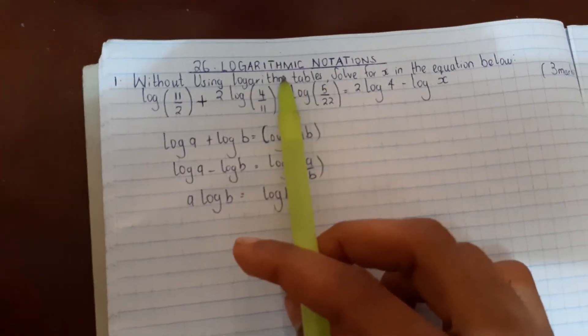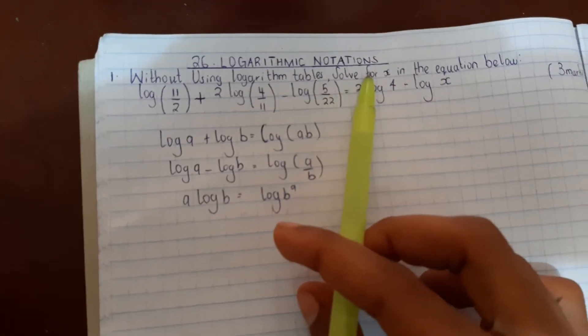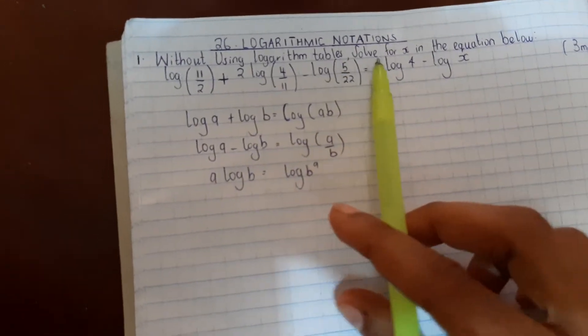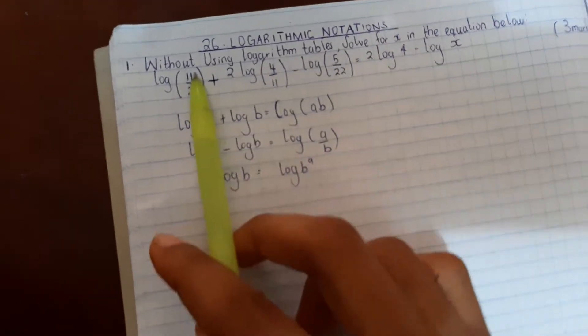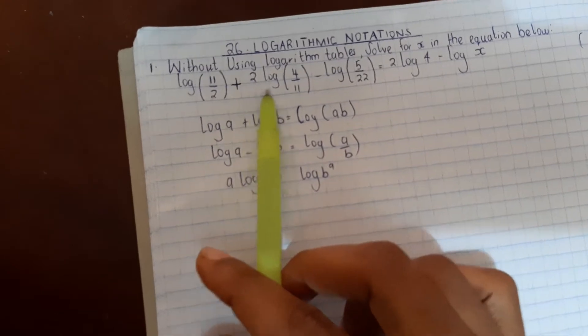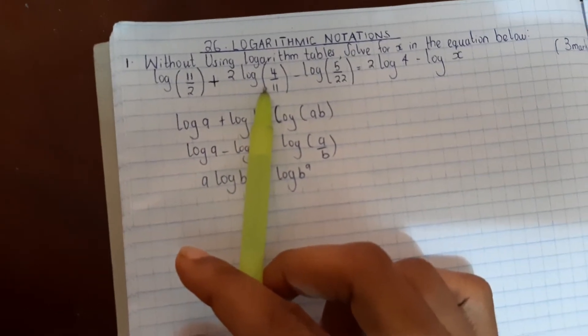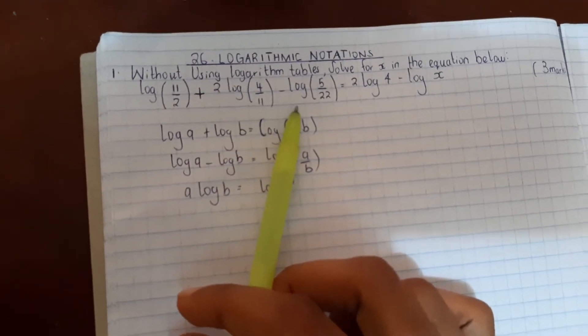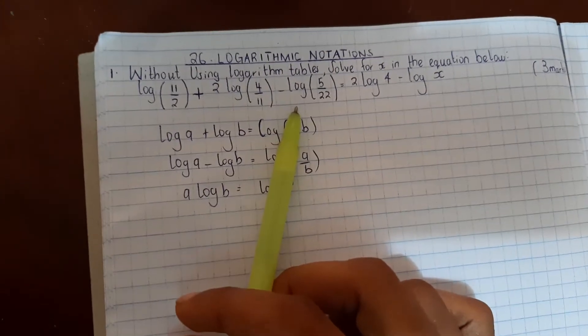Topic 26: Logarithmic notation. Without using logarithm tables, solve for x in the equation below. Log 11/2 plus 2 log 4/11 minus log 5/22 equals 2 log 4 minus log x.